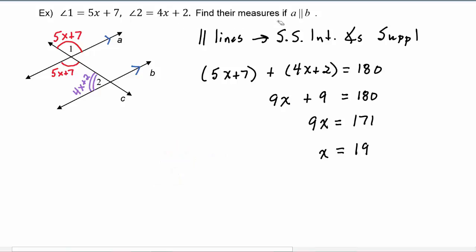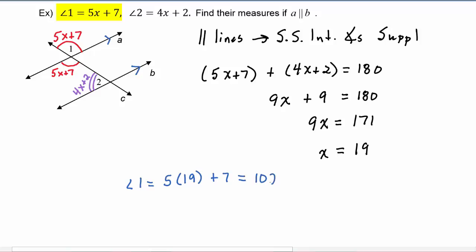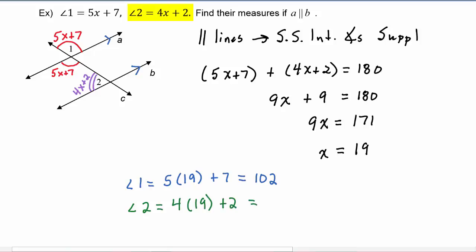Now we need to find the measures of the two angles, so we plug in x = 19. Angle 1 equals 5 times 19 plus 7, which equals 102 degrees. Angle 2 equals 4 times 19 plus 2, which equals 78 degrees. And there are our two angle measures.